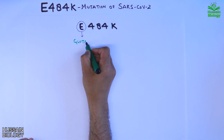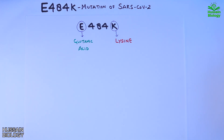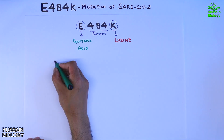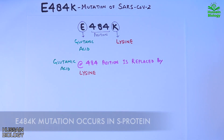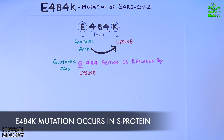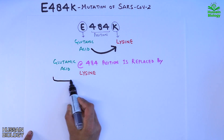First, let's decode what E484K means. The letter E stands for glutamic acid and K stands for lysine amino acid. The number 484 tells us the position of that amino acid in the S protein. In the E484K mutation, glutamic acid at position 484 is replaced by lysine — a negatively charged amino acid replaced by a positively charged one — which changes the dynamics and properties of the S protein.